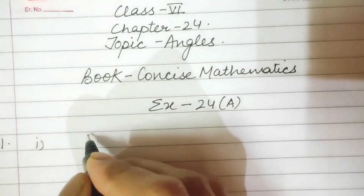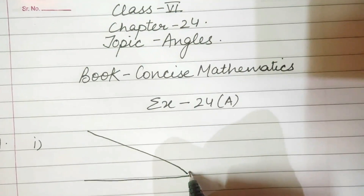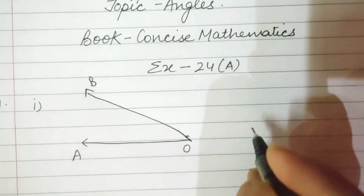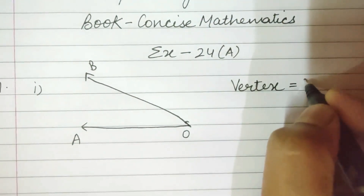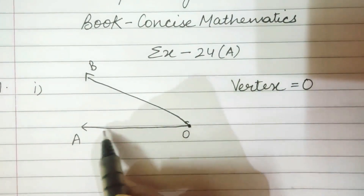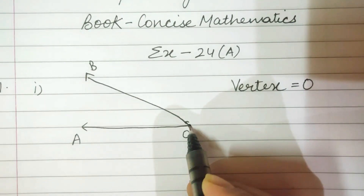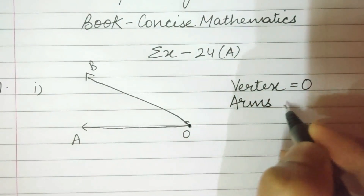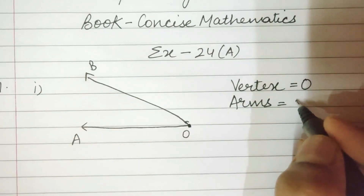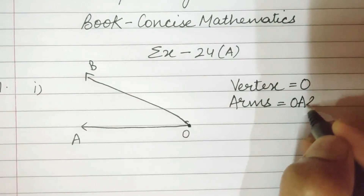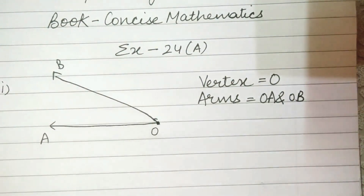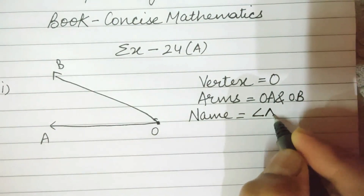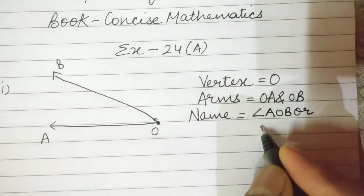First part: they had given angle AOB. The vertex of this angle is O — this is the vertex, the starting point from where two rays start. Where two rays intersect is called the vertex, so vertex is O. Then, the arms — two rays are the arms of the angle — so the two rays are OA and OB. These are the two arms of the angle.